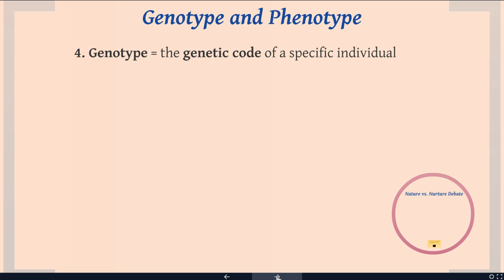Genotype and phenotype. The genotype is the genetic code of a specific individual. We just talked about a genome — a genome is the genetic code for an entire species. So you and I share the human genome, but you and I each have our own unique genotype, which is the genetic code of me as an individual and you as an individual. Your genotype always includes two copies of each gene — one from mom and one from dad.